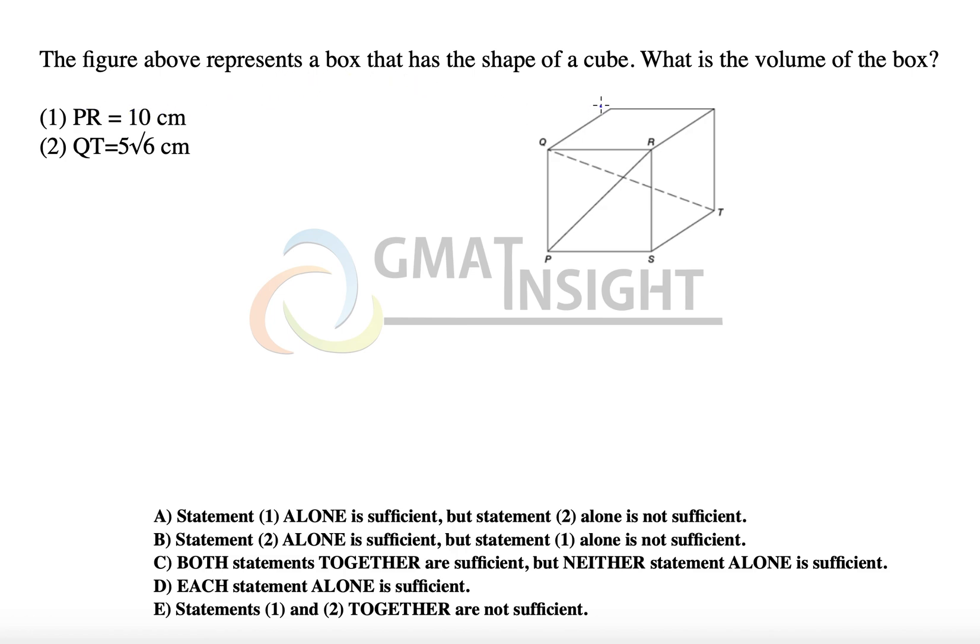The figure here represents a box that has a shape of a cube. A cube has all the sides equal and in case of a cube, we can say that PR is equal to side square root 2 while QT, which is the longest diagonal, is equal to side square root of 3.